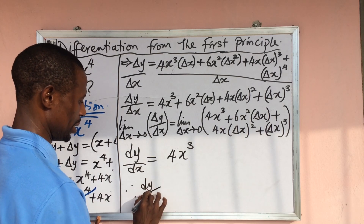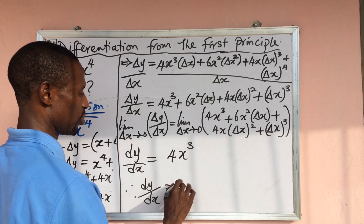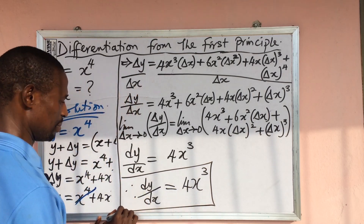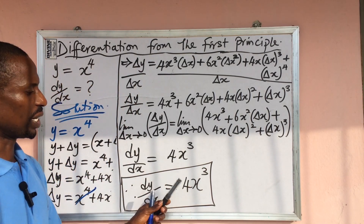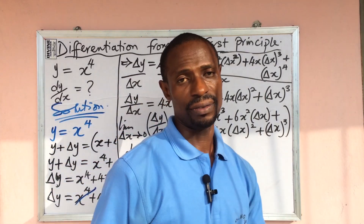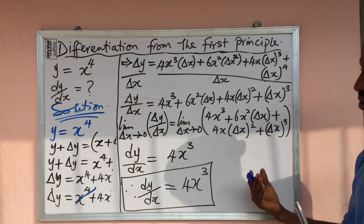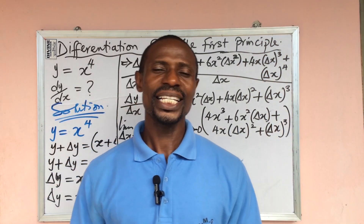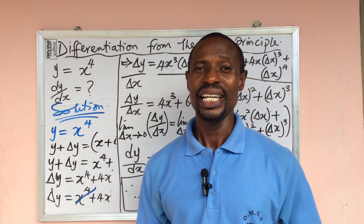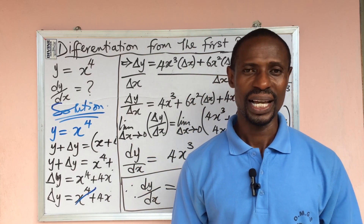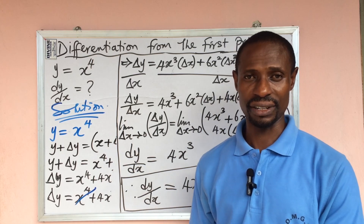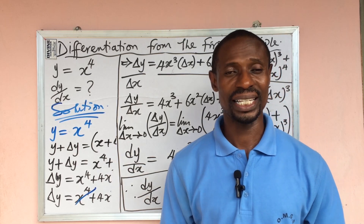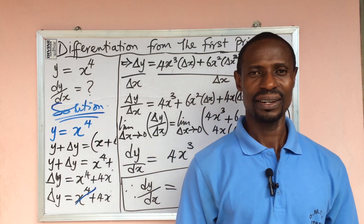Therefore dy/dx equals 4x to the power of 3. If you use the formula method to simplify this you get the same answer — 4x³ — just as we did at the beginning. Remember this is Online Maths TV and my name is Jakes Anemo. If you got something good from this video give it a thumbs up, and if you have a question about differentiation from the first principle drop it in the comment section below. I love you and everyone at Online Maths TV loves you too — thanks once again.